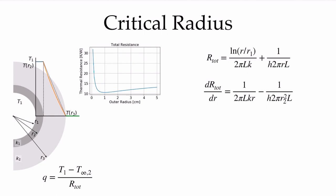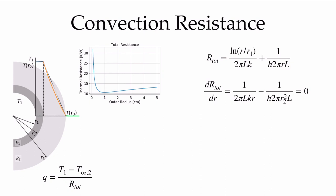Let's define the critical radius. The total resistance is the conduction resistance plus the convection resistance, where R is the outer radius. To find the extreme point — in this case a minimum — I take the derivative of the total resistance with respect to R and set it equal to zero. Solving that, I find that the critical radius is equal to the conductivity of the insulation k divided by the convection coefficient h. This is the solution for when the derivative equals zero — my critical radius.